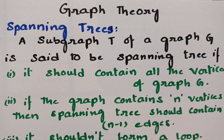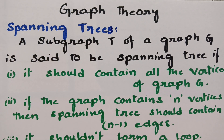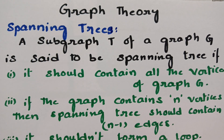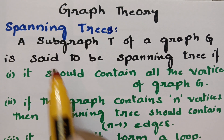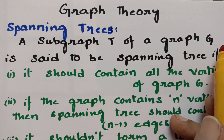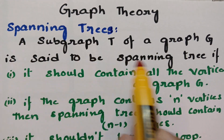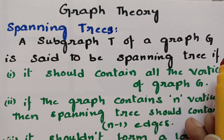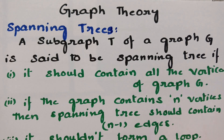Today's video is on spanning trees. This topic is from graph theory. A subgraph T of a graph G is said to be a spanning tree if it follows three conditions.